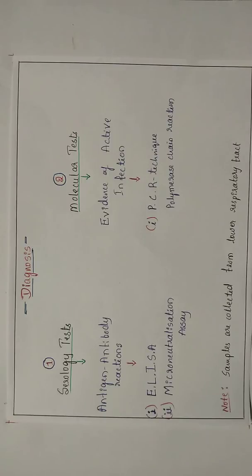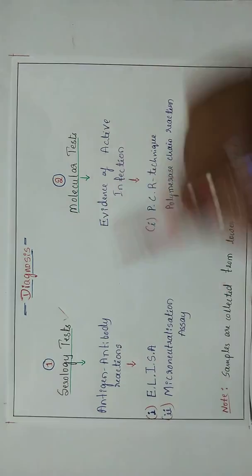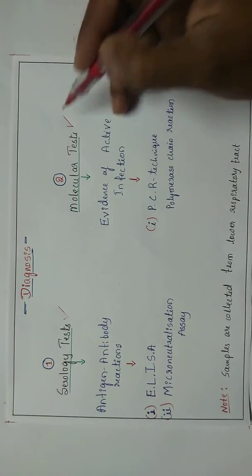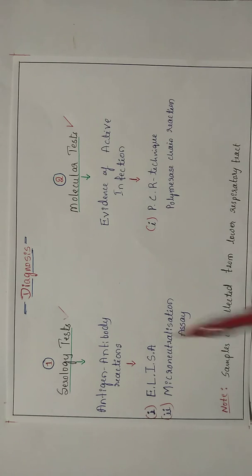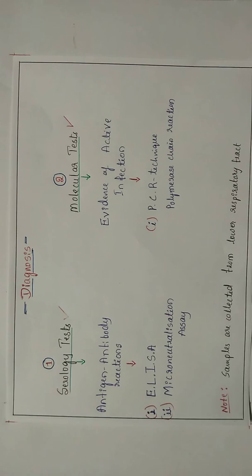We have discussed about transmitting methods and now we will see how the disease can be diagnosed by the doctors or in the laboratories. Generally we have two types of tests: one is serology test and other one is molecular test. The serology test is mainly based on antibody reactions, addition antibody reactions, where we look for the production of antibodies by our immune system against that virus infection.